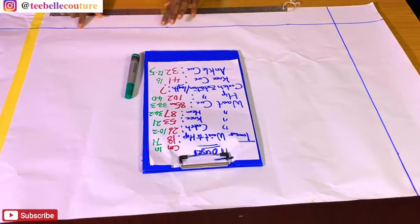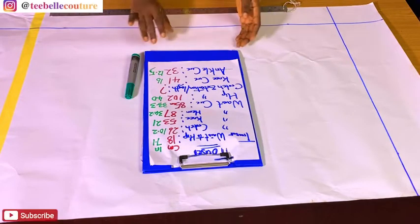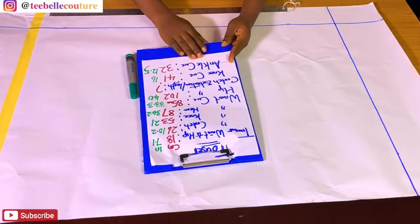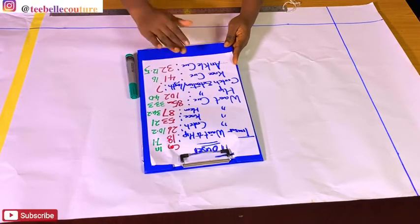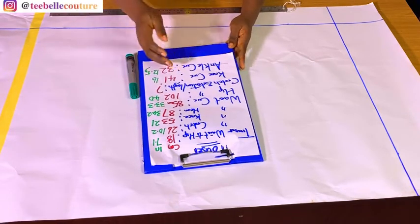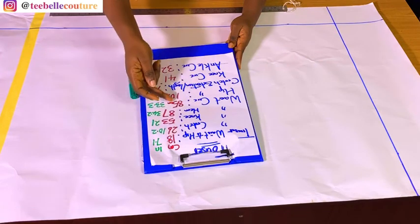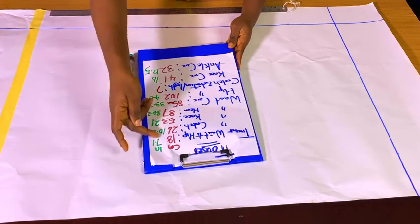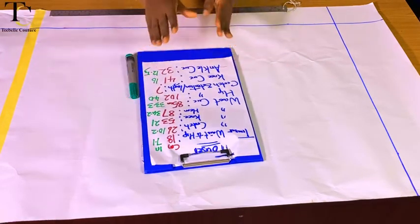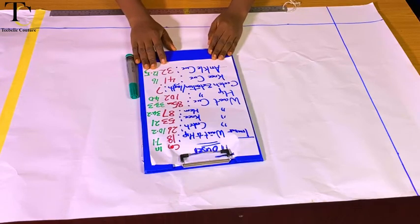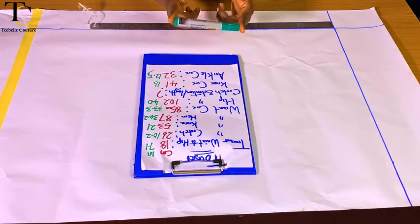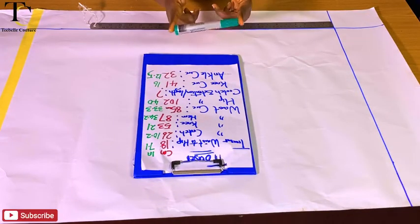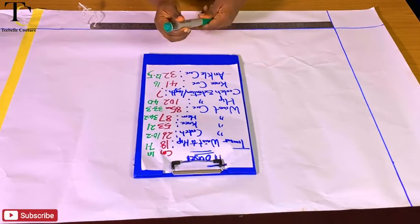The first measurement I'm going to be putting is along my vertical lines. I have my measurements that I'm going to be using for this trouser block — both in centimeters and in inches. The red ones are written in centimeters while the green ones are written in inches, so whether you are using centimeters or inches you'll be able to follow along. I'm going to be using the green marker to draft the front trouser.